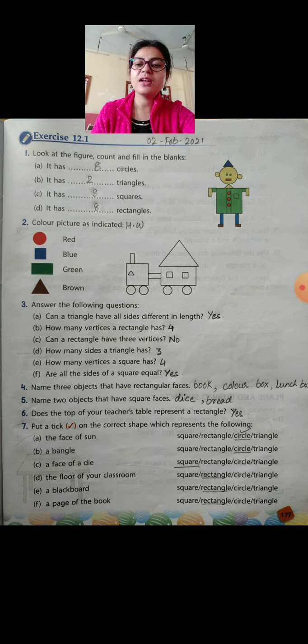Question 2, color the picture as indicated. Children, in this picture, it is made up of the four basic shapes and for each shape, you have been given a color. That is, for red, it will be a circle.